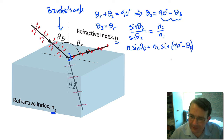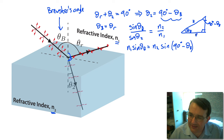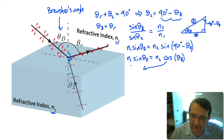Using a right-angle triangle with angle theta_b, the remaining angle is 90° − theta_b. The sine of (90° − theta_b) equals the cosine of theta_b, since the opposite side for one angle is the adjacent side for the other. So we have n1·sin(theta_b) = n2·cos(theta_b).